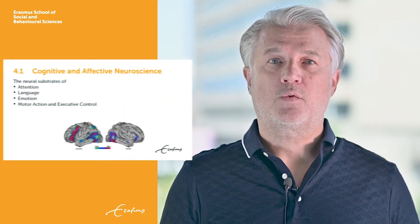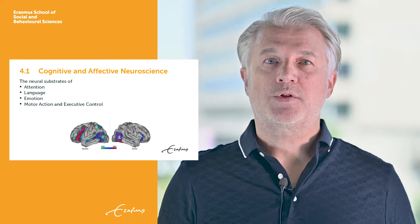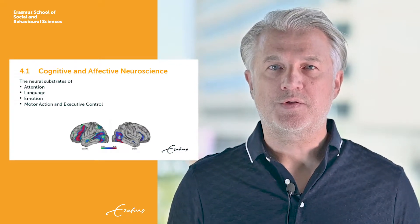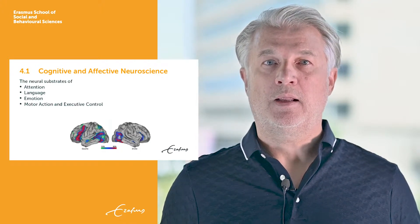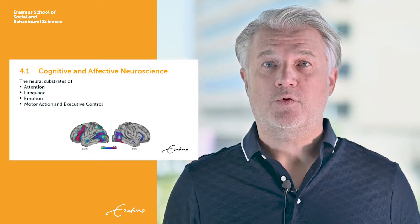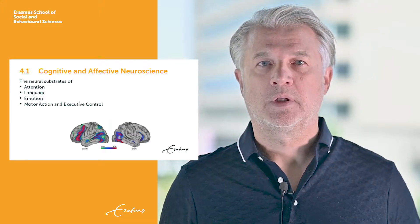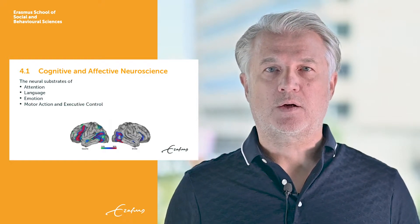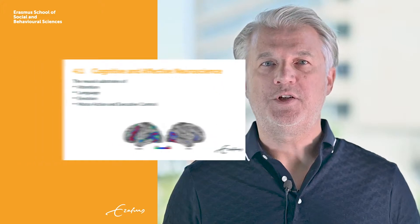Our first course is called Cognitive and Affective Neuroscience. In this course, you will learn about the neural substrates of cognitive functions such as attention, memory and language, as well as emotion, motor action, and executive control. In addition, you will learn about techniques such as functional magnetic resonance imaging, fMRI, and EEG.